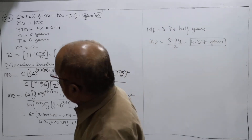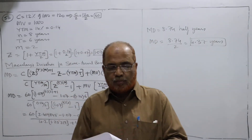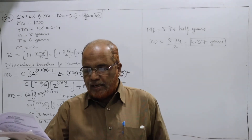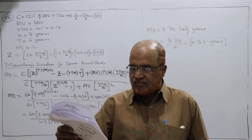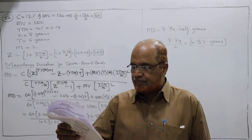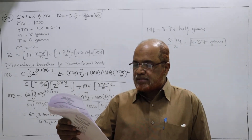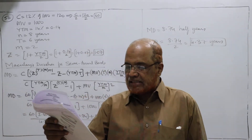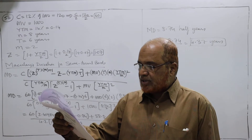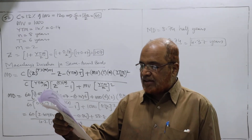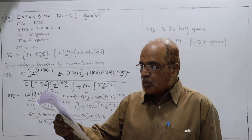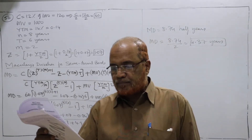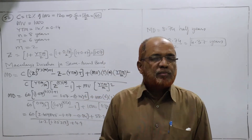We'll start problem number 50. We have completed 49 problems. Now see the 50th problem: a company limited had issued bonds with a face value of rupees 1000, coupon of 12% payable semi-annually, and a time to maturity of eight years. The market rate of interest is 14%. Find the duration of the bond two years after it is issued.